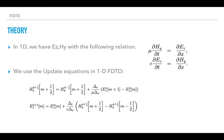Now we can go through the theory. Consider a one-dimensional space where there are only variations in the x-direction. Assume the electric field only has a z-component. Maxwell's equations give that there exists a non-zero HY. Using the EE algorithm we can figure out the update equations.